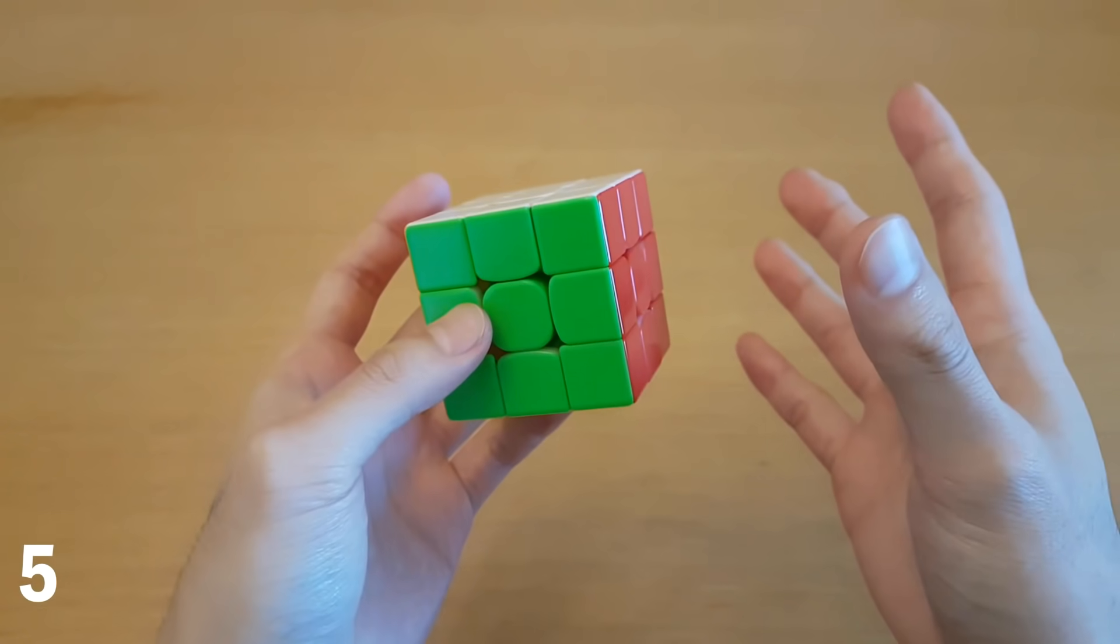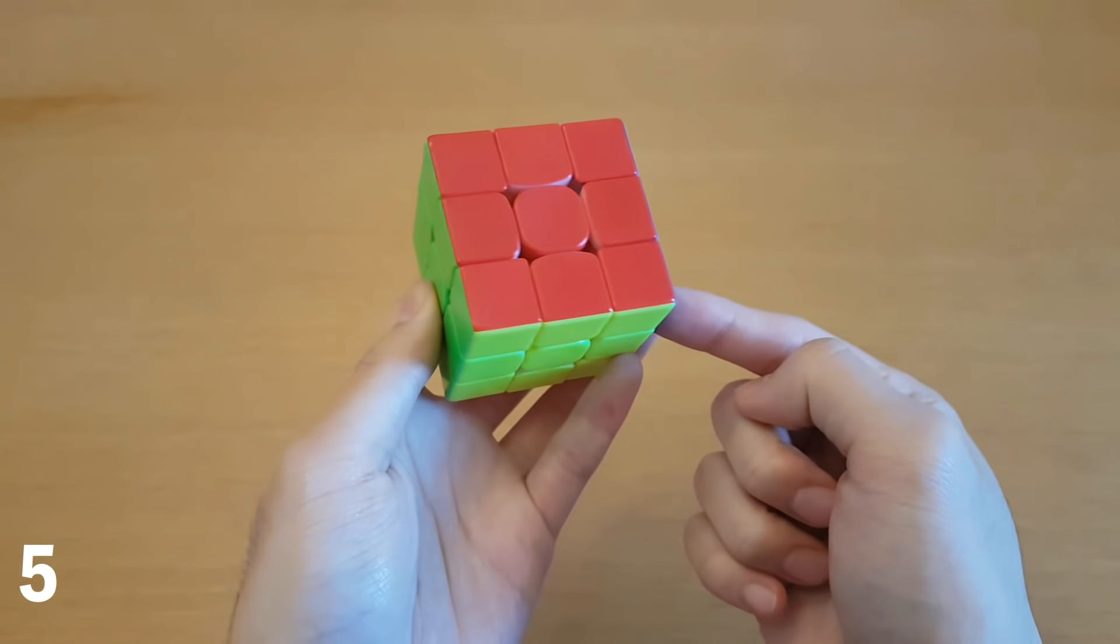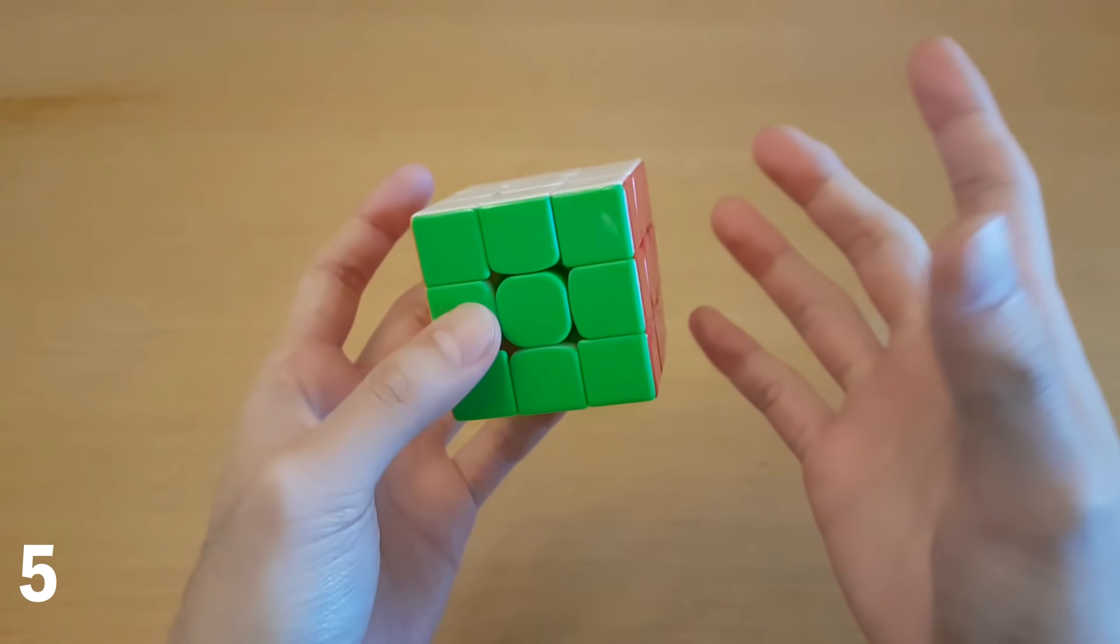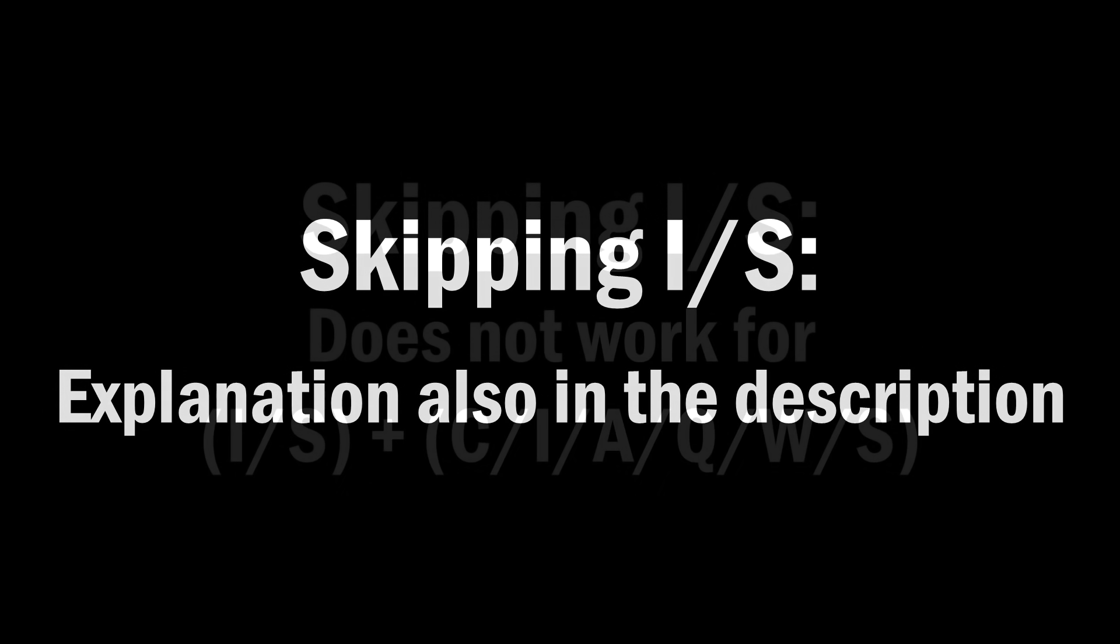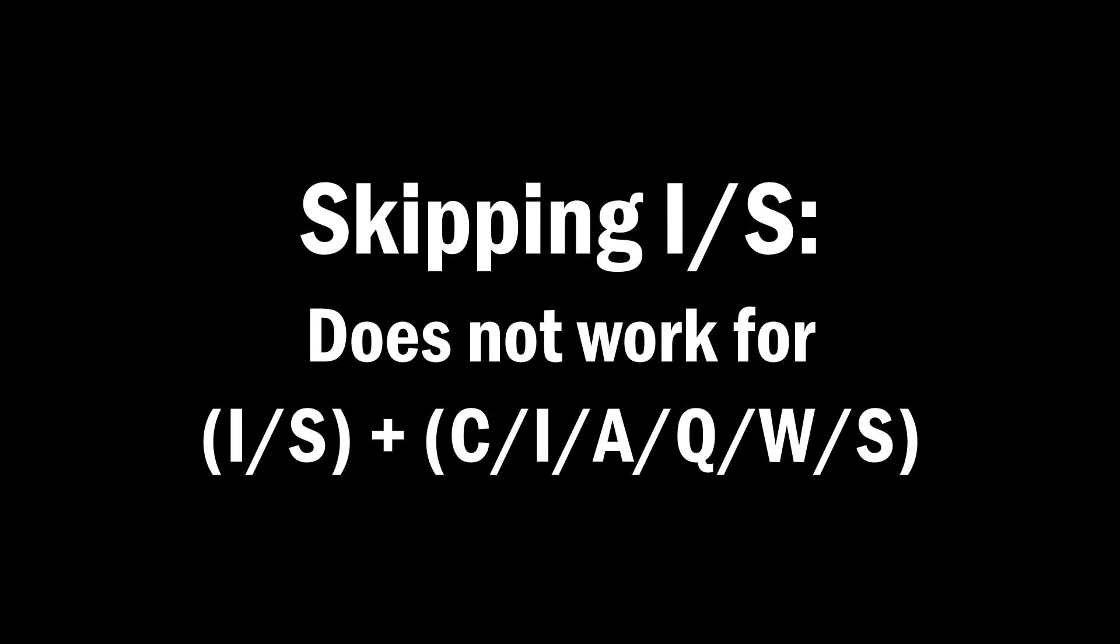If you practice and get fast at this, then getting the I or S targets, which are usually the worst ones, can actually be the best ones. A quick explanation is also in the description with a few examples. Remember, this only works if the target besides I or S is not in the M slice.